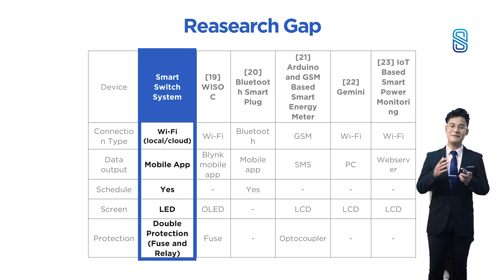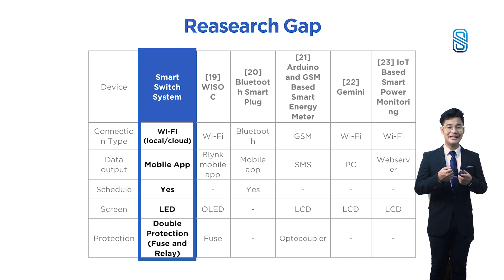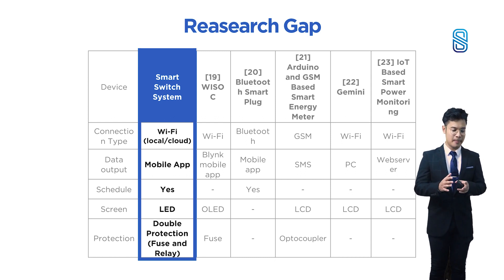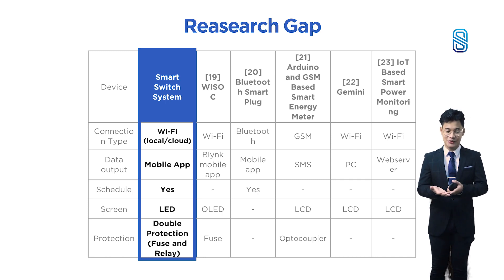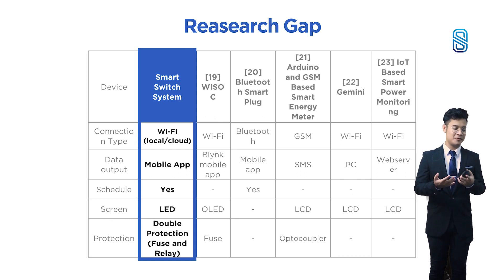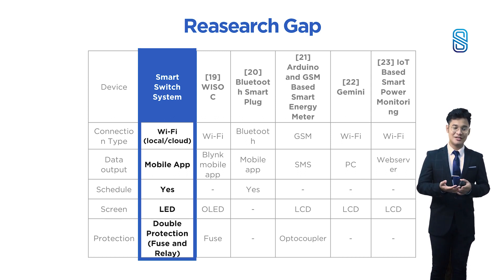For the display, we are not using any OLED or LCD — we're just using LED. LED uses low power consumption, making the device more energy-friendly. For protection, the majority of previous systems don't have protection, though some use a fuse and optocoupler. We prioritize safety and aim to give maximum safety to users, so we use double protection: fuse and relay.